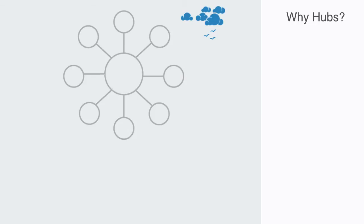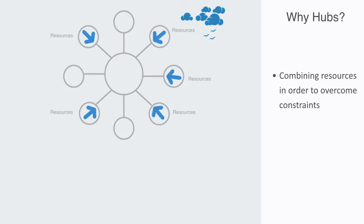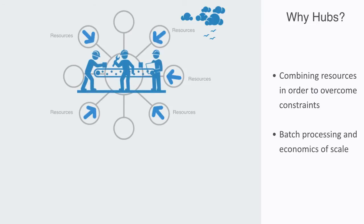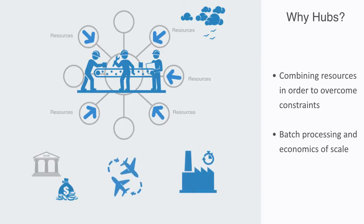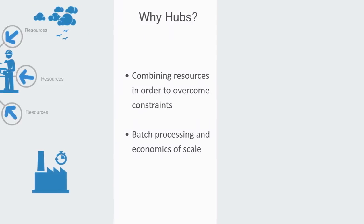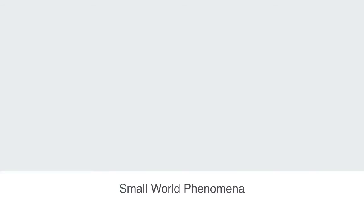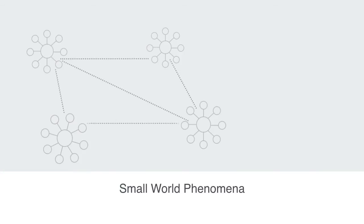So why do we see these local hub-and-spoke structures emerging? There are a number of reasons, but many tie back to the fact that the system is under certain environmental resource constraints, and it will only be possible for nodes to overcome some of these constraints by combining their resources. This, coupled with batch processing and the economies of scale it enables, are behind the formation of many hubs — from banks that amass financial resources to fund large projects, to international airports, to factories as local hubs in manufacturing networks. These hubs serve the function of connecting nodes locally but also connecting them globally to other hubs in the network.